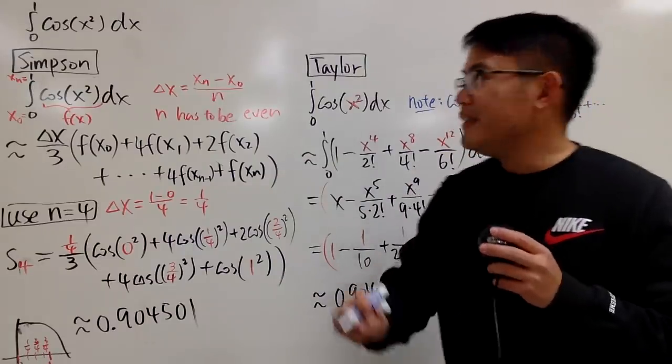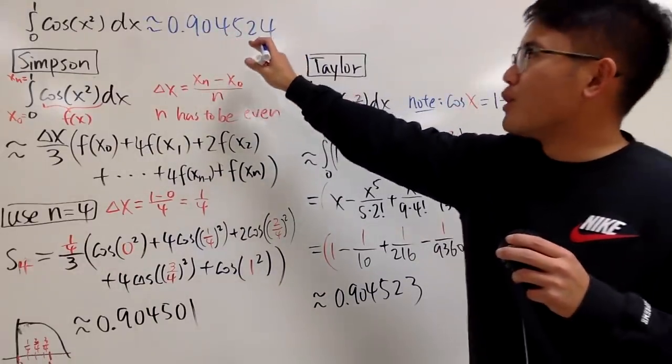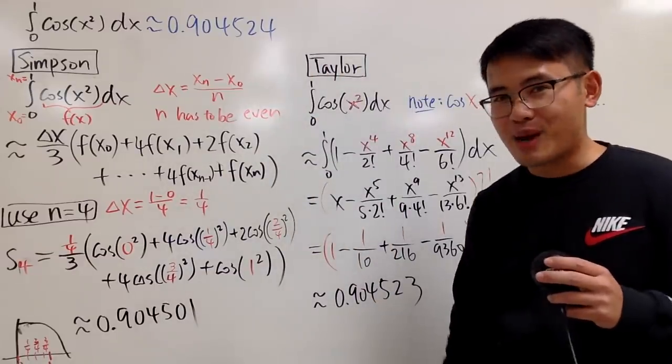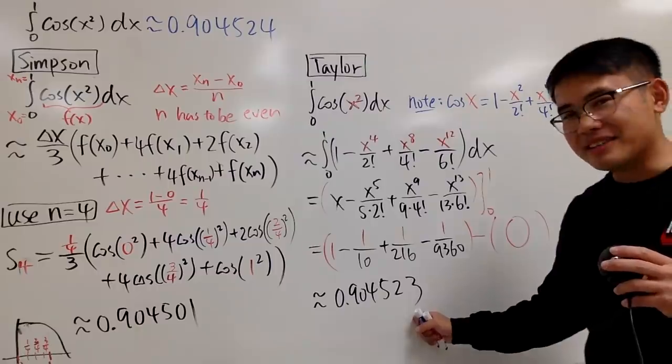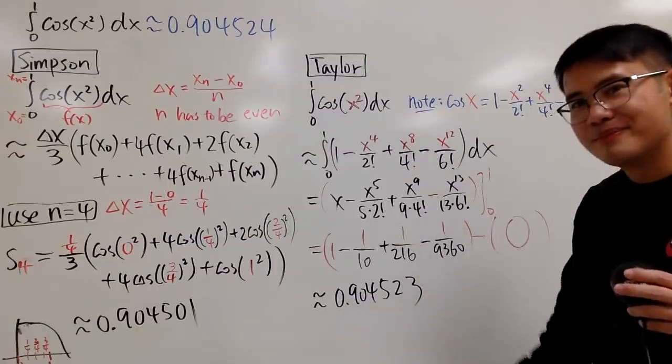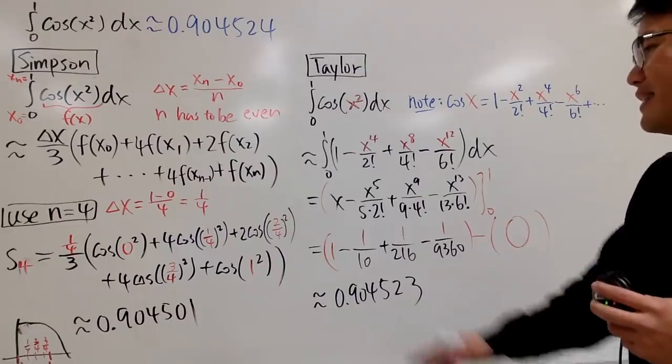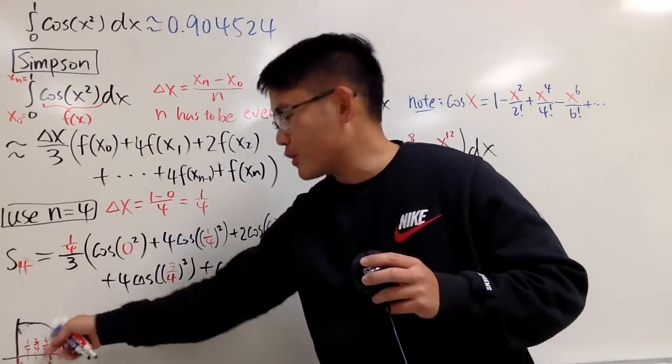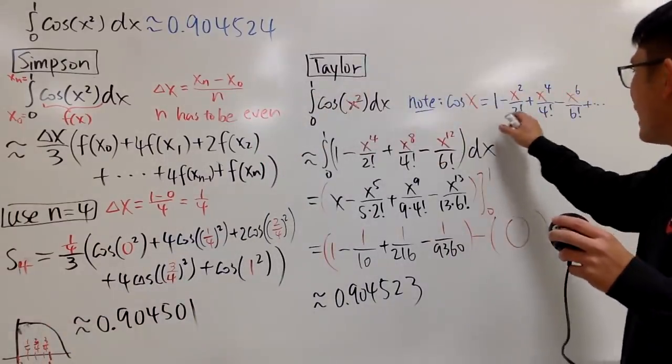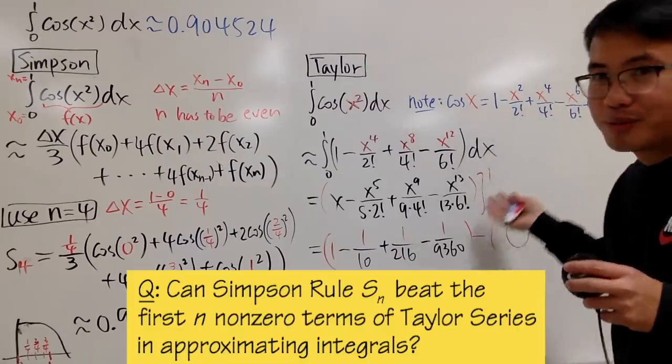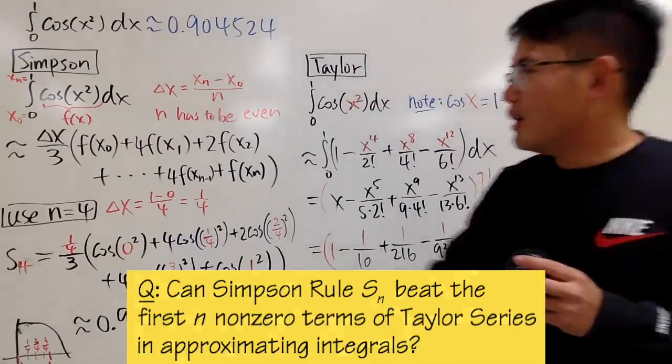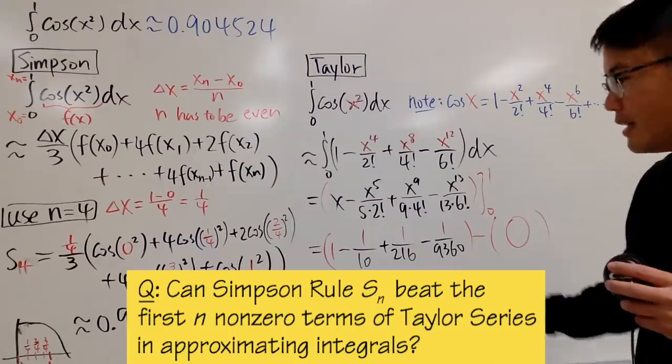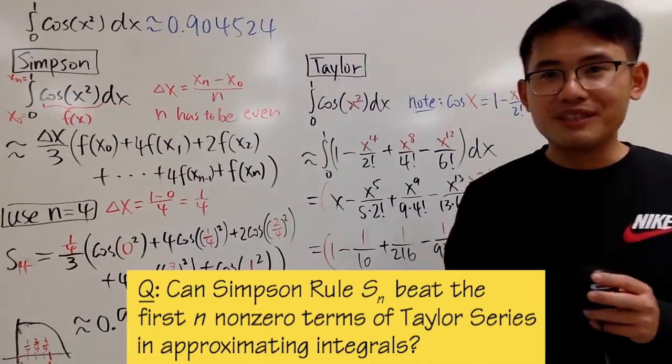Hopefully you guys looked at this and thought about which one you think is going to win. Now, the moment of truth. The answer is 0.904524 by using Wolfram Alpha or any kind of computer software or maybe a graphing calculator. As you can see, in this case, yes, the dad is the dad. I think this is a really fair comparison because, as I said, I use 4, it's 4 sub-intervals. And I'm using the first 4 non-zero terms. So I think this is a pretty fair comparison. Of course, you can try n equals 6 and the first 6 non-zero terms and make a comparison. I'm going to leave that to you.